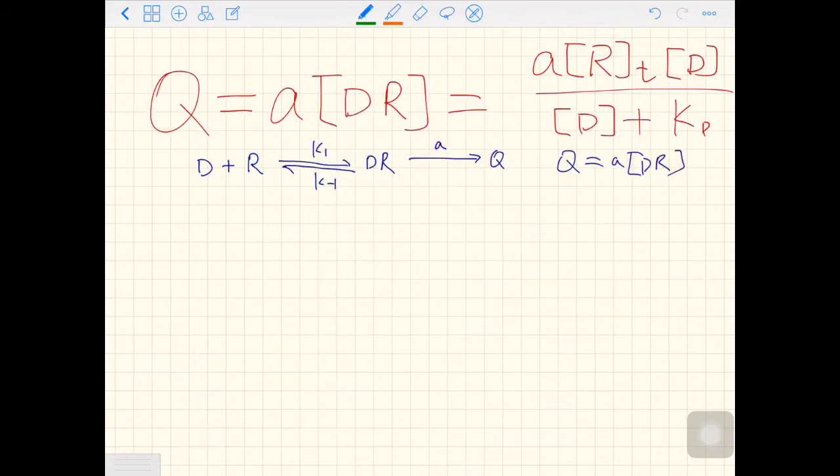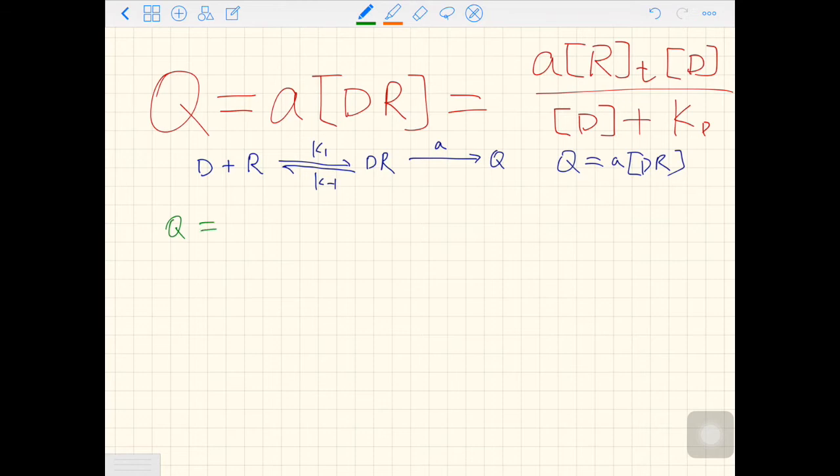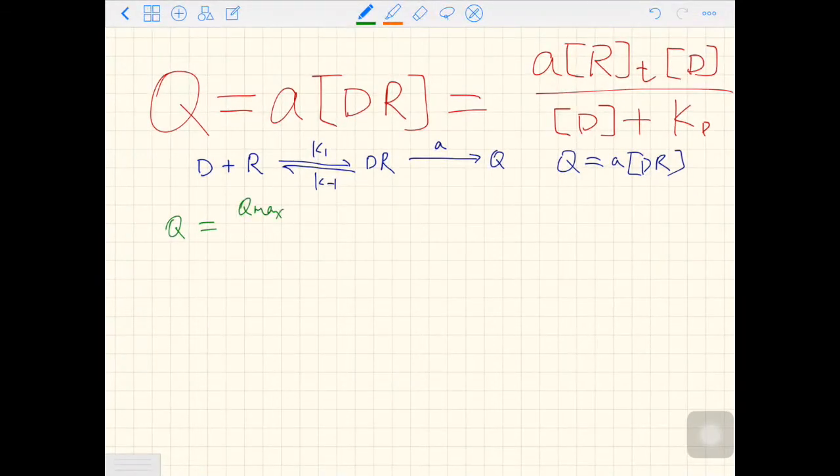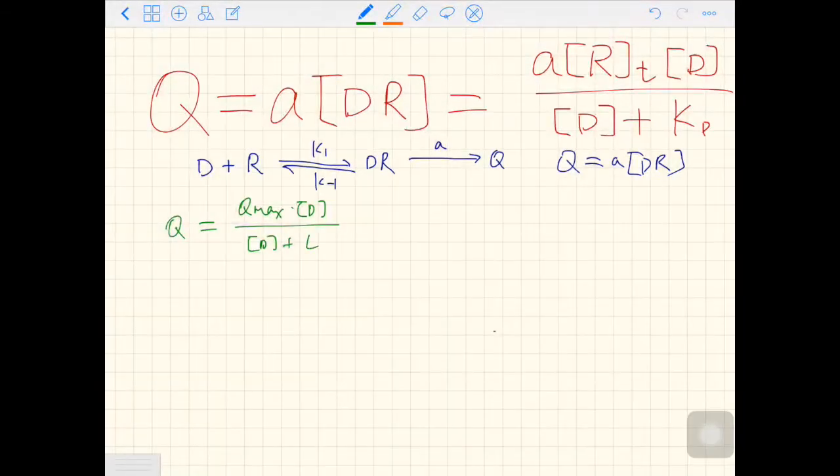That makes sense. So now we can rewrite the equation again. Q equals Q max times D over D plus EC50.